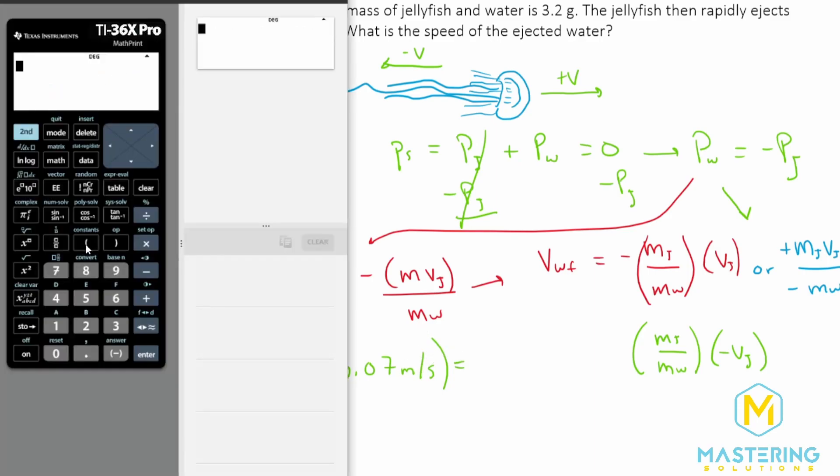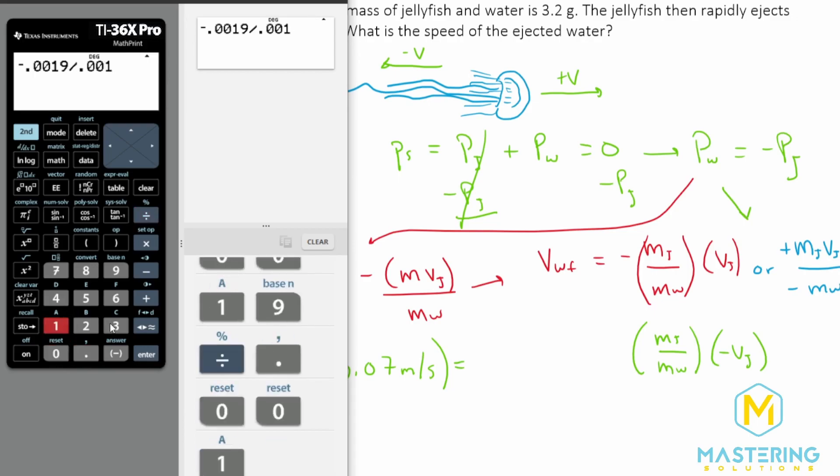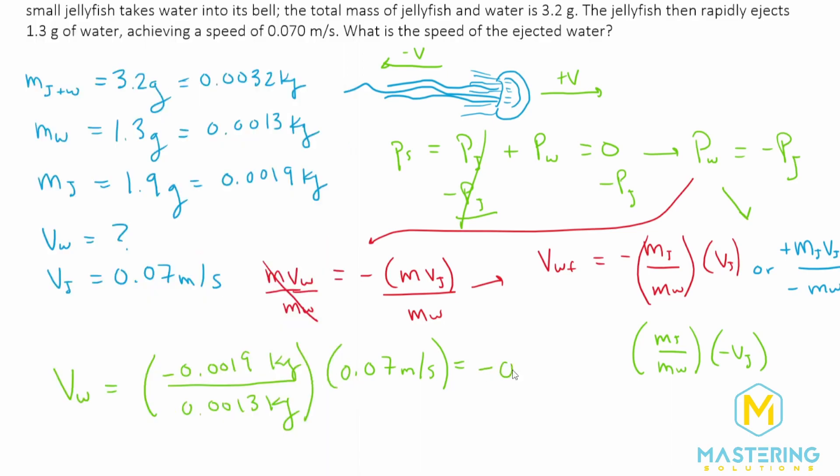So when we plug this in, we have negative 0.0019 kilograms divided by 0.0013 kilograms, and we're multiplying that by 0.07 meters per second, which gives us a final velocity of the water of negative 0.1 meters per second after the jellyfish ejects the water.